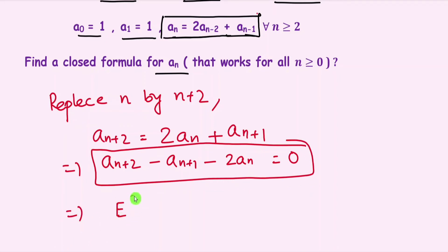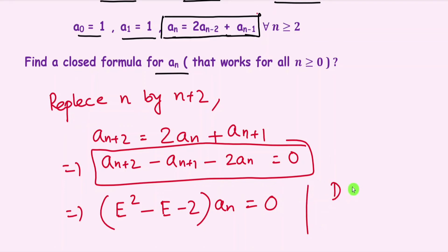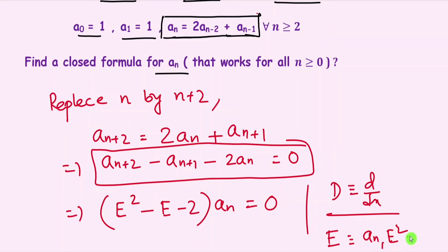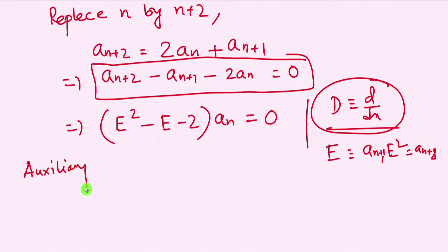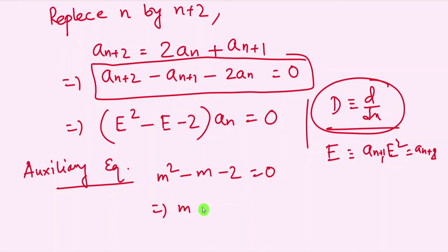We write this using the shift operator E: (E² − E − 2)a_n = 0, analogous to solving ordinary differential equations with the D operator. The auxiliary equation is m² − m − 2 = 0, which gives roots m = 2 and m = −1 — two real and distinct roots.